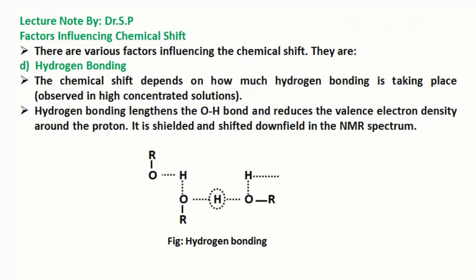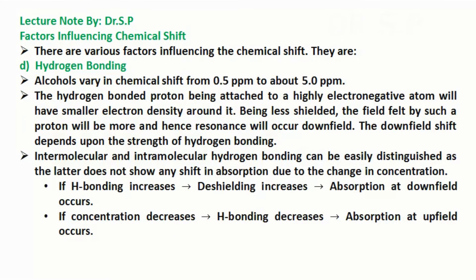d) Hydrogen Bonding: The chemical shift depends on how much hydrogen bonding is taking place and is observed in high concentrated solutions. Hydrogen bonding lengthens the O-H bond and reduces the valence electron density around the proton. It is shielded and shifted downfield in the NMR spectrum. Alcohols vary in chemical shift from 0.5 ppm to about 5.0 ppm. The hydrogen bonded proton being attached to a highly electronegative atom will have smaller electron density around it. Being less shielded, the field felt by such a proton will be more and hence resonance will occur downfield. The downfield shift depends upon the strength of hydrogen bonding.